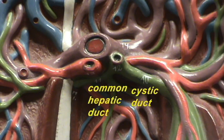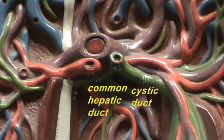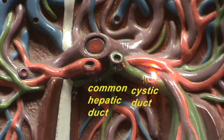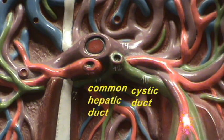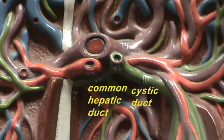The common hepatic duct takes secretions from both the right and left lobes of the liver and brings them to the common bile duct. The cystic duct provides a pathway where, in between meals, the bile continually produced by the liver can be diverted and stored in the gallbladder, which concentrates the bile and stores it for future use.